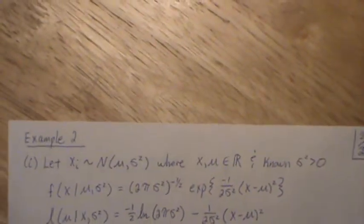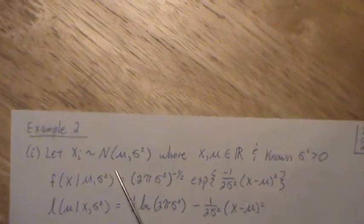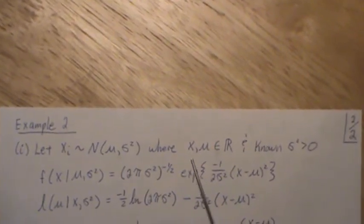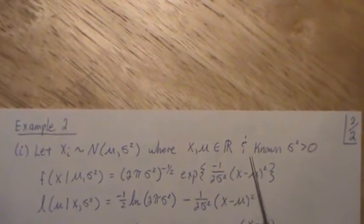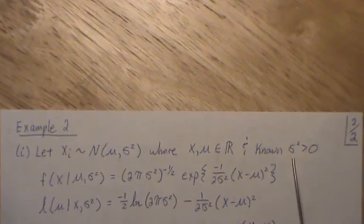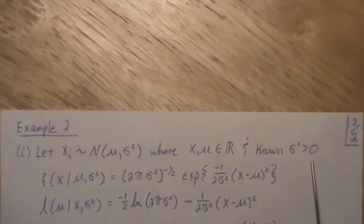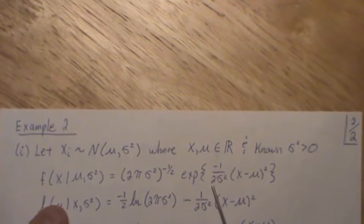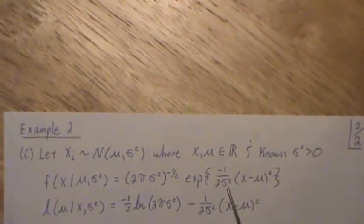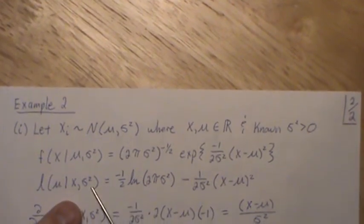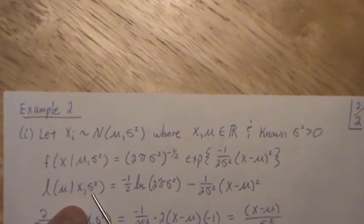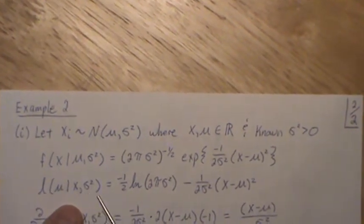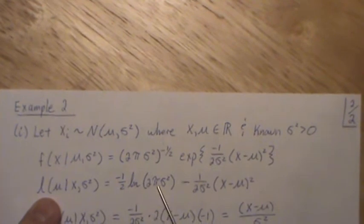Example number two: let Xi be Normal(mu, sigma²), where x and mu are real numbers. We're going to assume we know sigma squared and it's positive. So the density for this normal distribution is given, and the likelihood — remember that sigma squared is constant so it's in the given part — is this. You just take the log of each of those.